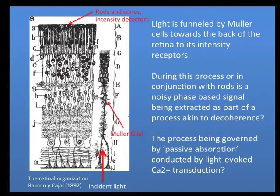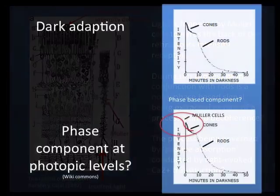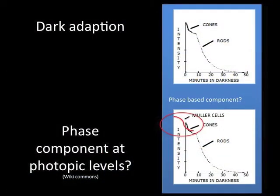The retina decohering the light array by first uncoupling a phase component in the glial Müller cell, as light is funnelled to be detected in its photon expression at the retina's intensity receptors. Perhaps that's why intensity receptors are located on the back face of the retina, facing away from the incident light. This would identify rod and cone intensity-based processing as being, in effect, secondary.